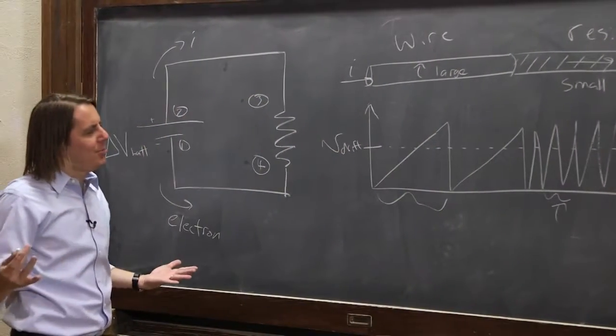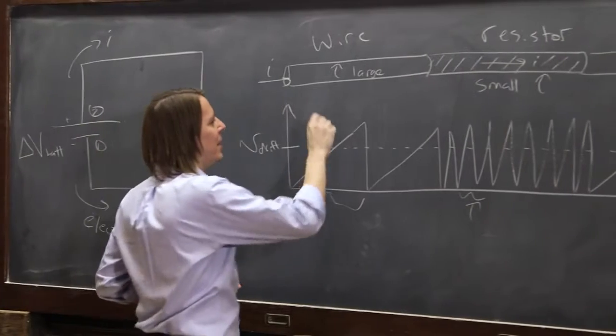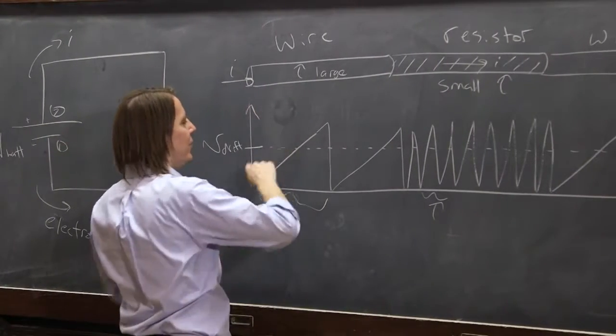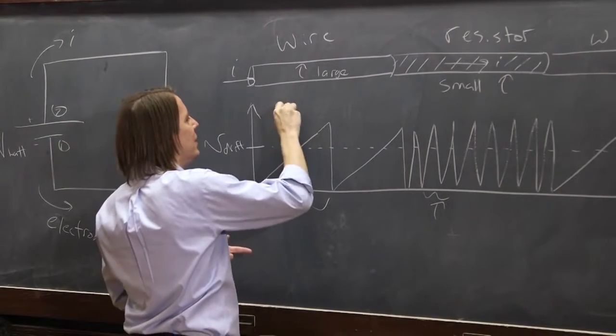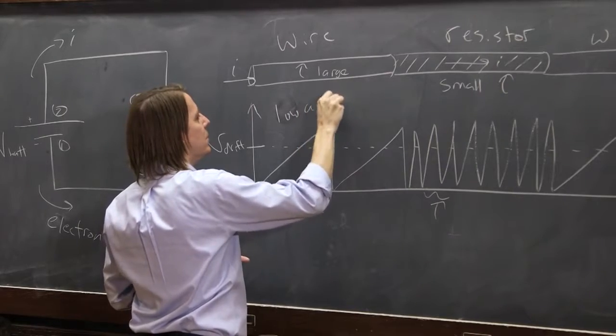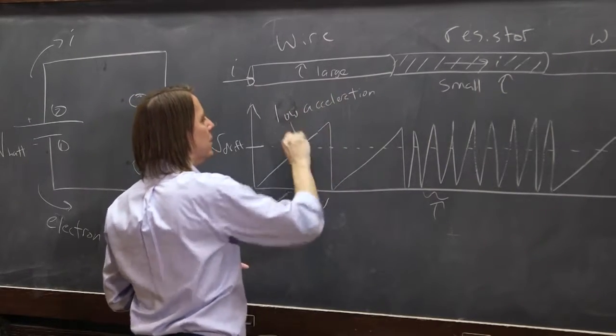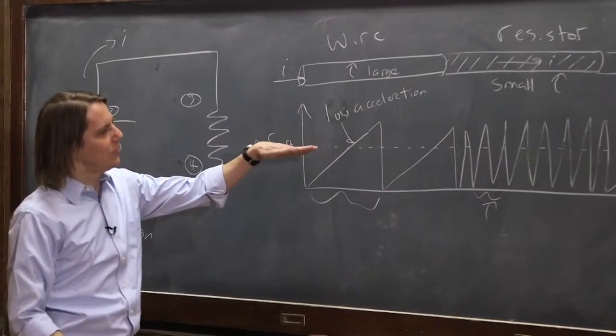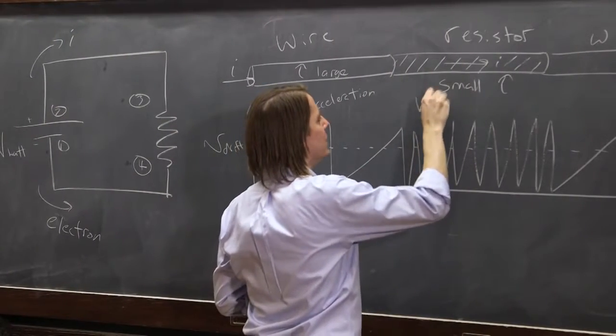But let's think about what we said about what's happening inside the material. This one has a long time to get to the same velocity. It's a low acceleration. You can just see it. That slope is low. And here it's got a high acceleration.